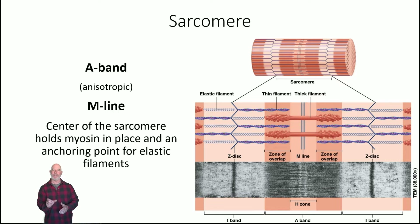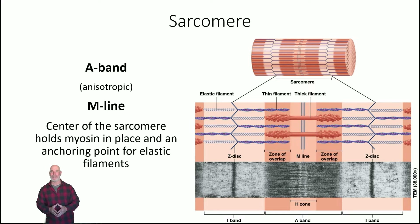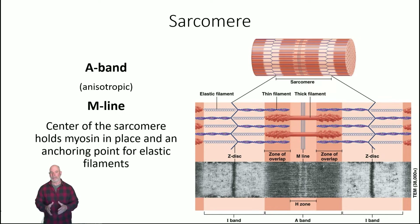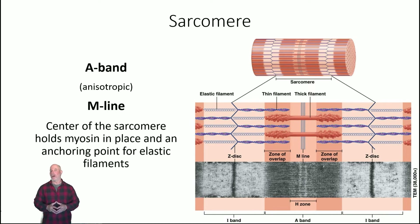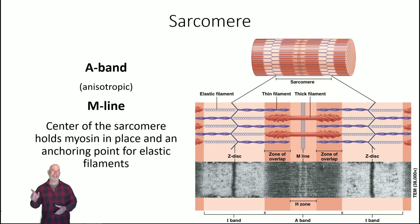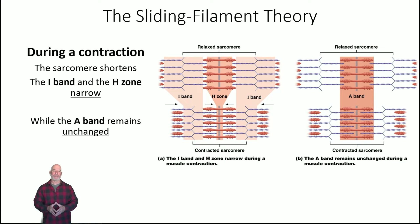Right in the middle of the H-zone is the M-line — M stands for middle, from the German word 'Mitte.' This is the center of the sarcomere; it helps hold myosin in place so it doesn't move around, and it's also an anchoring point for the elastic filaments. That means the elastic filaments are anchored at both the Z-disc and the M-line.